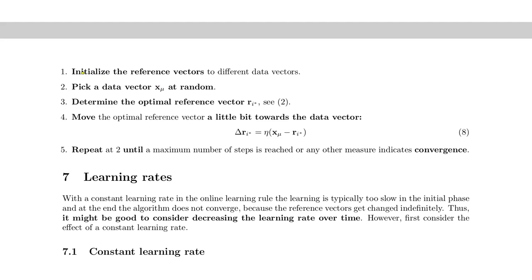The algorithm reads as follows: we initialize the reference vectors to different data vectors — if we have 10 reference vectors, we take the first 10 data points and place the reference vectors at those positions. Then we pick or receive a data vector from the source, determine the optimal reference vector, and move it a little bit towards that data point according to this equation — we change the position of the reference vector a little bit towards the data point.